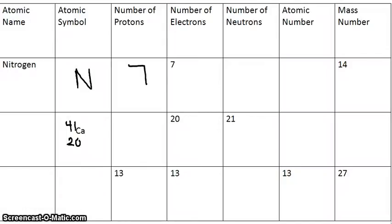The number of neutrons — first you have to find the mass number, which we're given, so it's 14. The neutrons is the mass number subtract the number of protons. So your number of neutrons is 14 subtract 7, which gives you 7 neutrons.